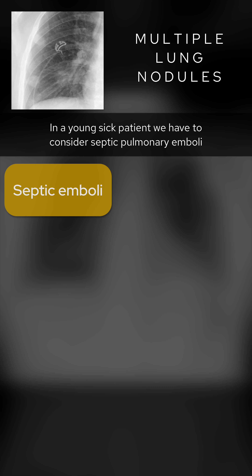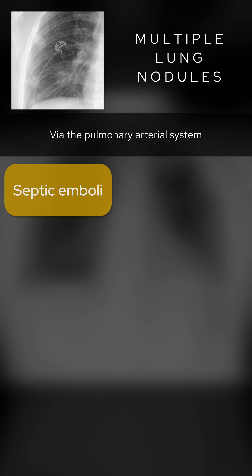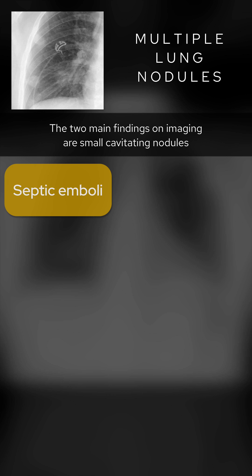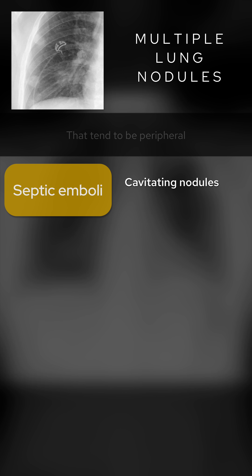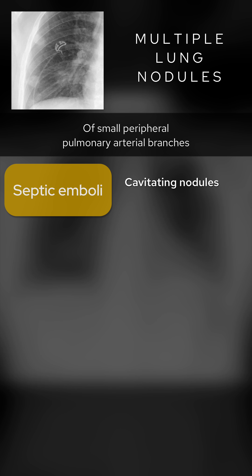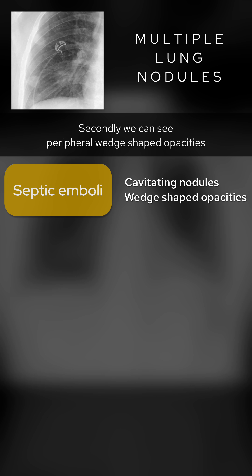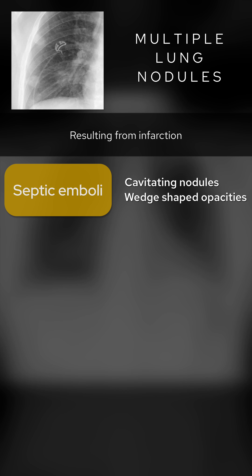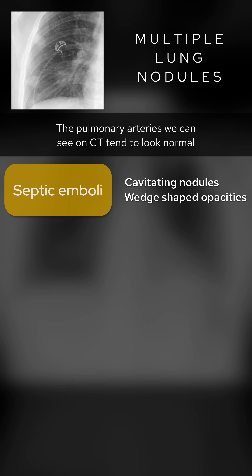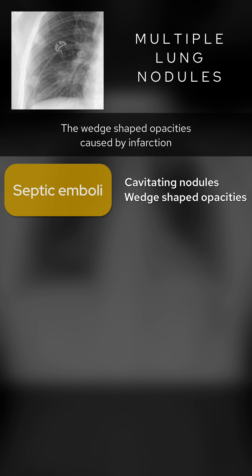In a young sick patient we have to consider septic pulmonary emboli. Here there is an infection elsewhere that embolizes to the lungs via the pulmonary arterial system. The two main findings on imaging are small cavitating nodules that tend to be peripheral, thought to result from septic occlusion of small peripheral pulmonary arterial branches. Secondly, we can see peripheral wedge-shaped opacities resulting from infarction. The pulmonary arteries on CT tend to look normal, unlike standard PE, which can also lead to wedge-shaped opacities caused by infarction.